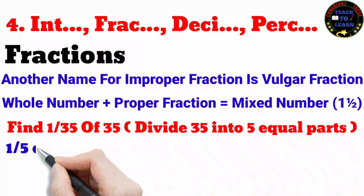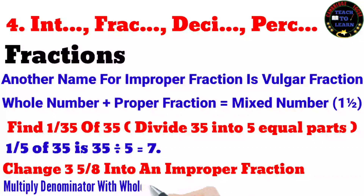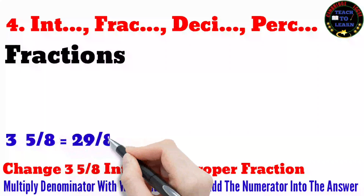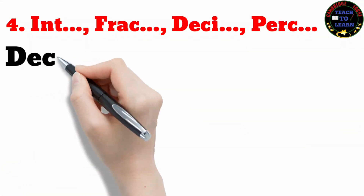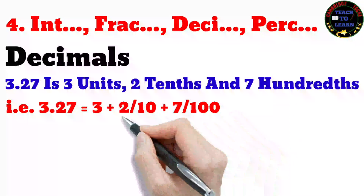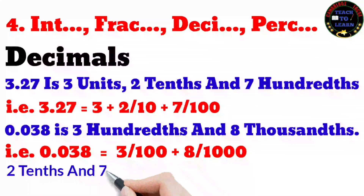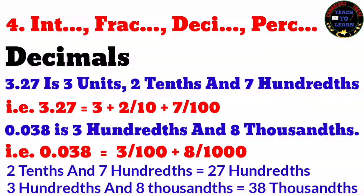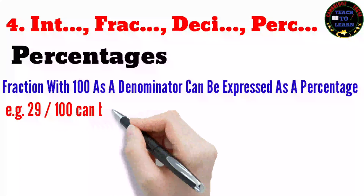Another name for an improper fraction is a vulgar fraction. A whole number plus a proper fraction equals a mixed number. Example: find 1/5 of 35 — this means divide 35 into 5 equal parts, so the answer is 35 ÷ 5 = 7. To change 3 and 5/8 into an improper fraction, multiply the denominator by the whole number then add the numerator. The decimal 3.27 is 3 units, 2 tenths, and 7 hundredths; 0.038 is 3 hundredths and 8 thousandths.